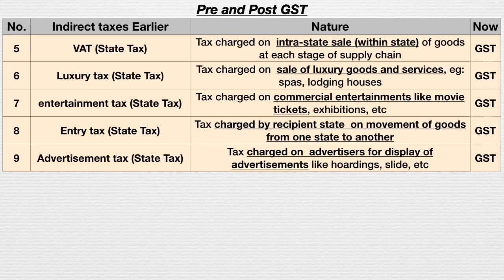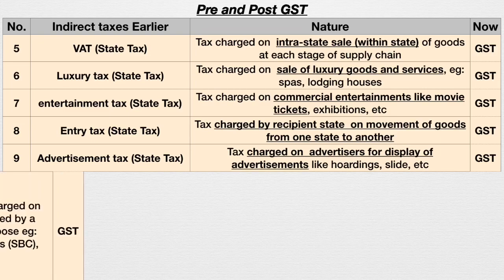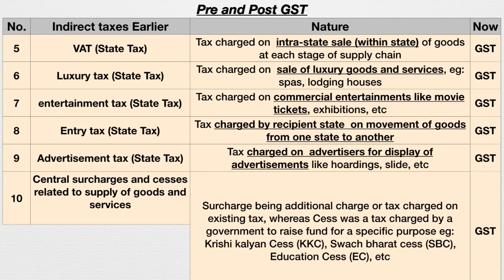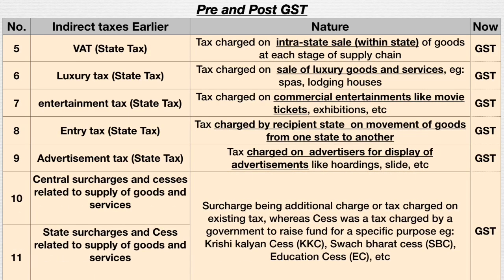Ninth is advertisement tax — a state tax charged on advertisers for the display of advertisements like hoardings, slides, etc. Advertisers had to pay this advertisement tax, which they would collect from their own customers. Now it has got replaced with GST.